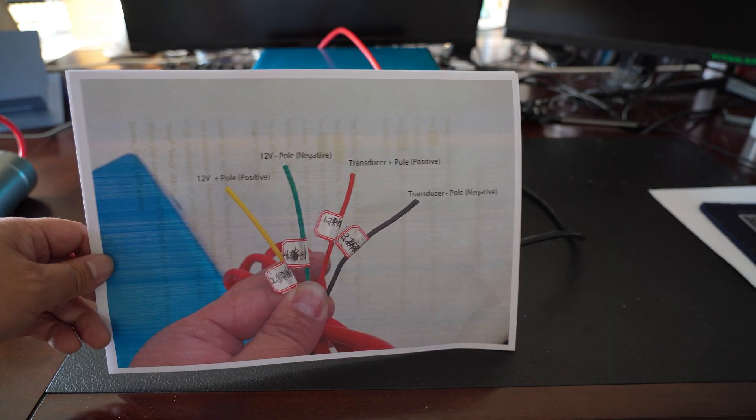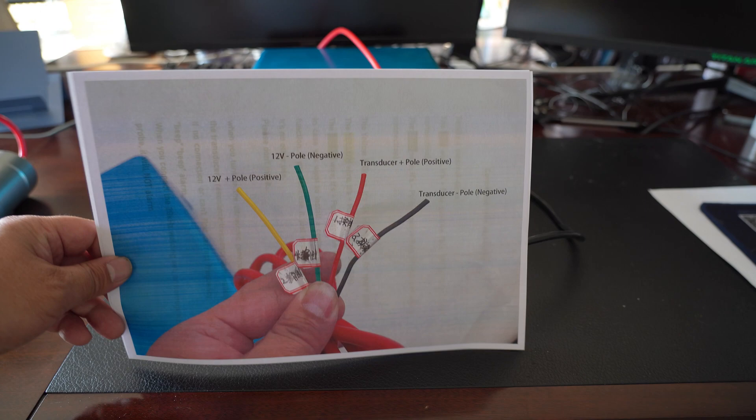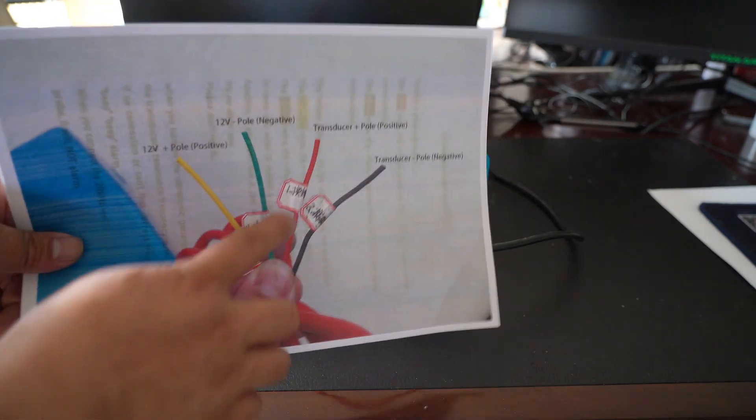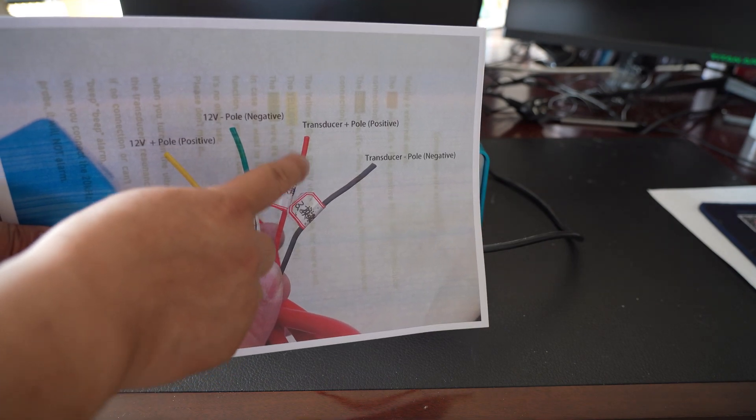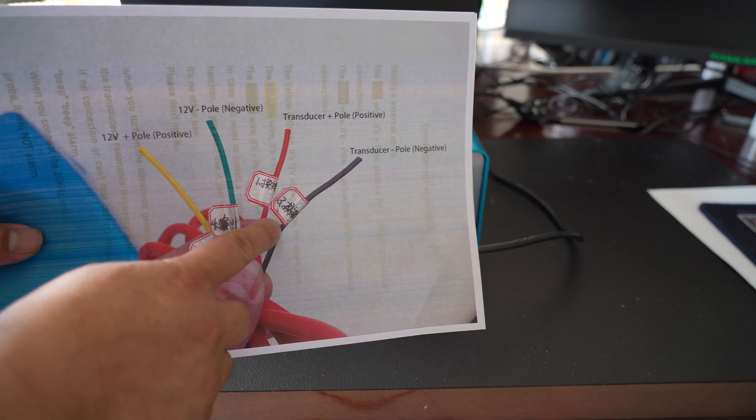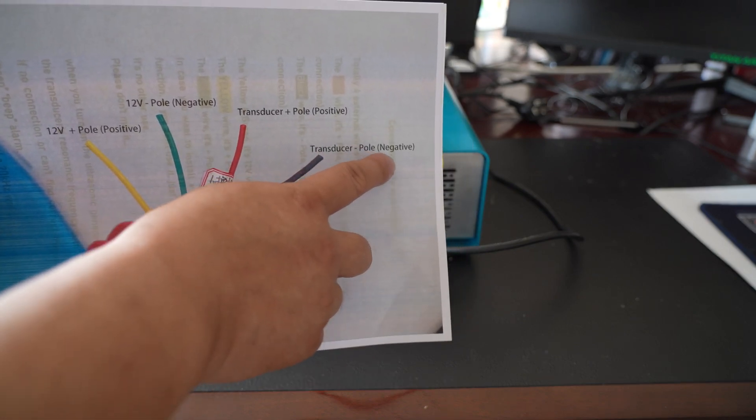You will receive a wire connected to the transducer. There are four wires. Red wire is for the transducer positive pole. Black wire is for the transducer negative pole.